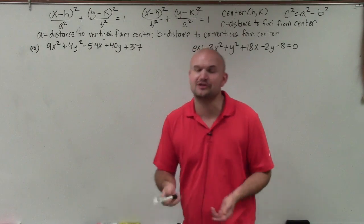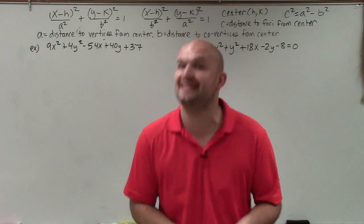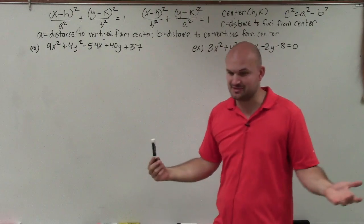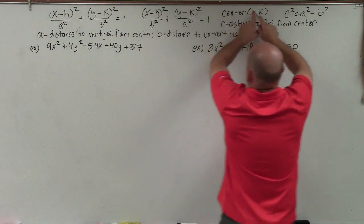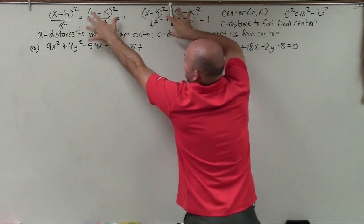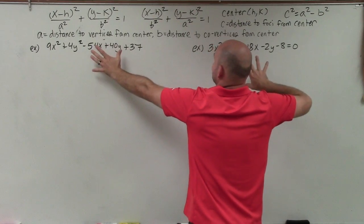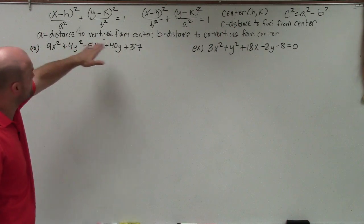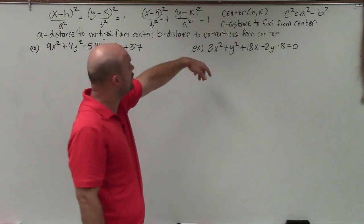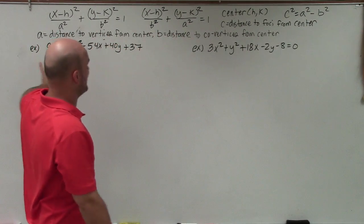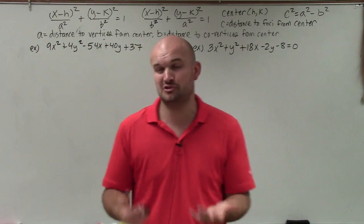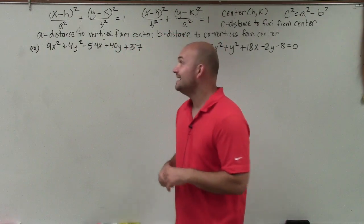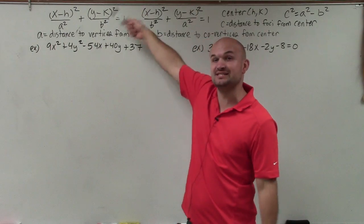Welcome, ladies and gentlemen. What I'd like to do is show you how to determine the center, the foci, the vertices, and the co-vertices of an ellipse when it's not written in standard form. You can see that it's all expanded out. The center is your h and k, which is clearly displayed in the standard forms, but not clearly displayed in the expanded forms.